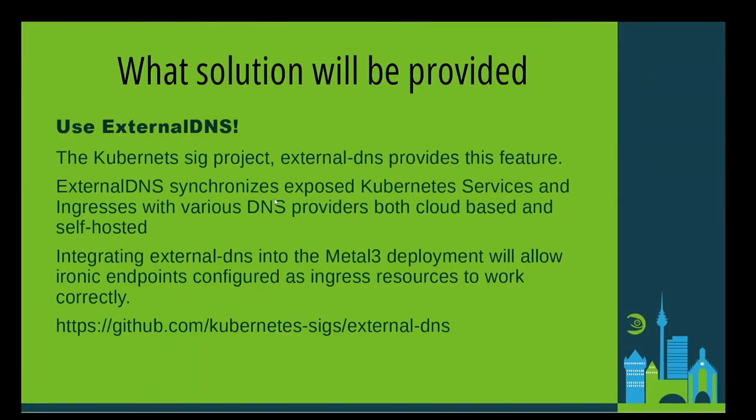The initial prototype of the Rancher Bare Metal project was designed using external DNS. External DNS provides the ability to synchronize exposed Kubernetes services and Ingresses with a customer's DNS provider. This initial design of the bare metal prototype used an Alpine Linux image to run external DNS, configured to integrate with Cloudflare as its DNS provider.